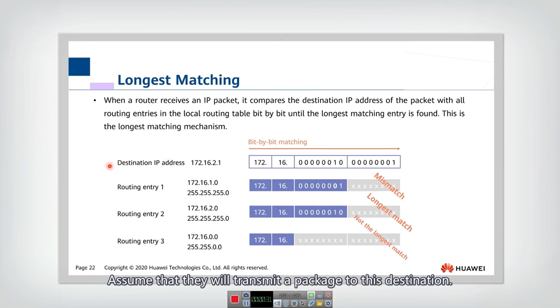Assume that we will transmit a packet to this destination and write it down. There are three different entries in the table, so you should compare one by one.